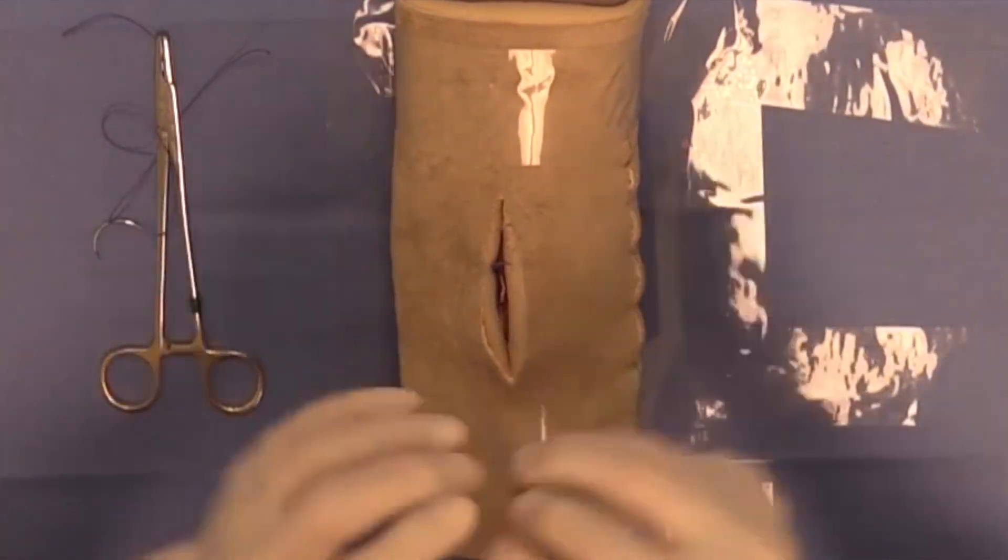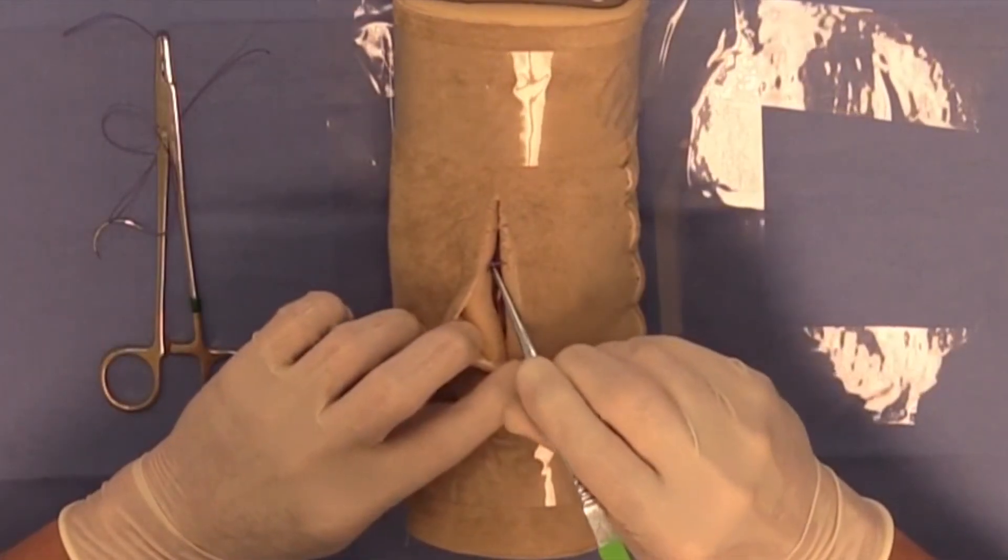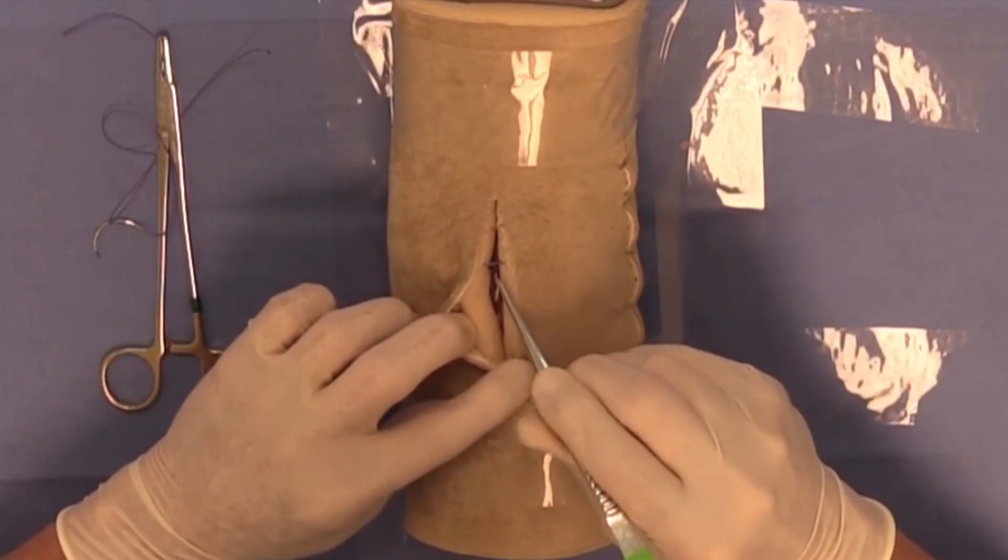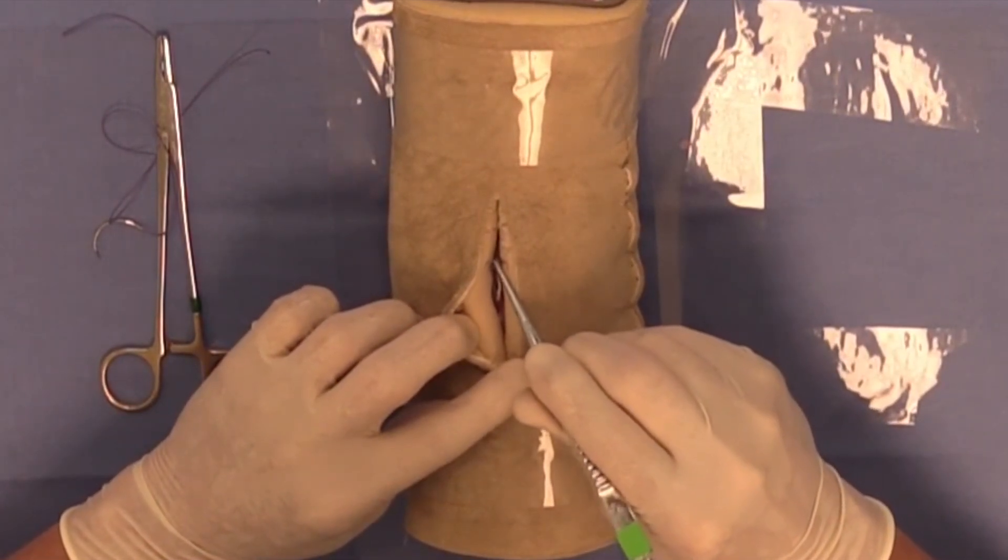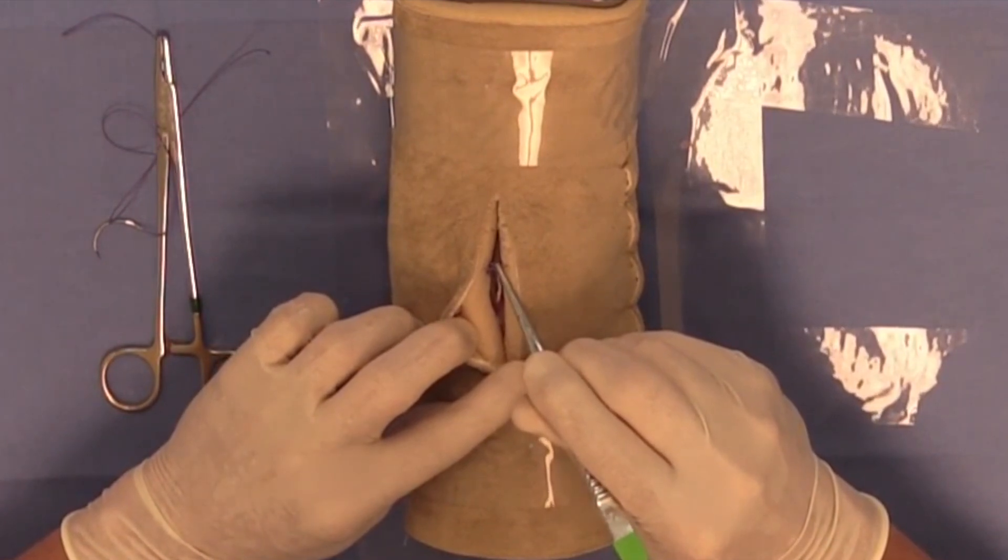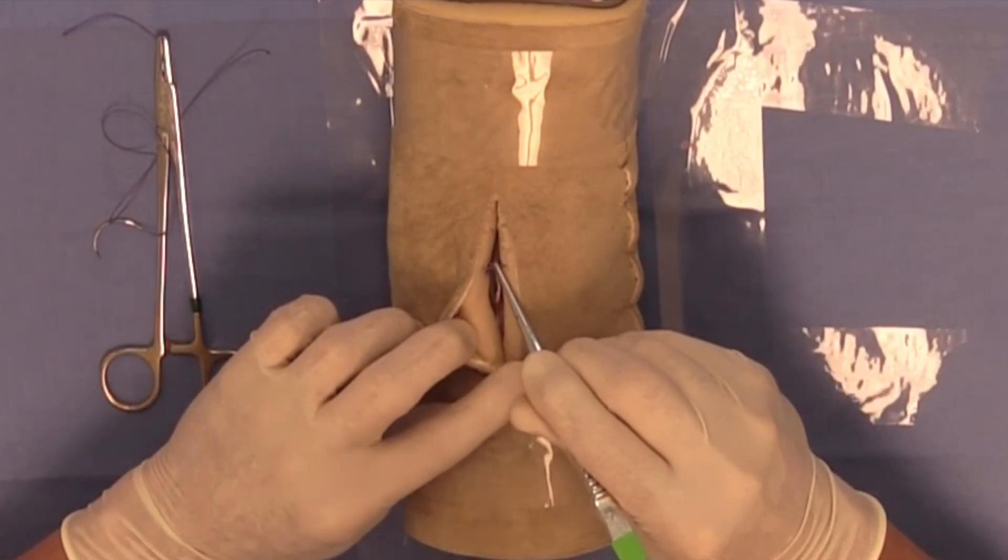And you can see that the knot here is deep to the loop part of the suture, thus completing burying the knot.